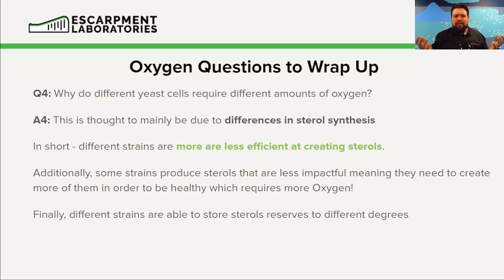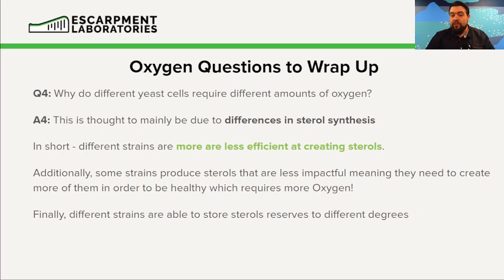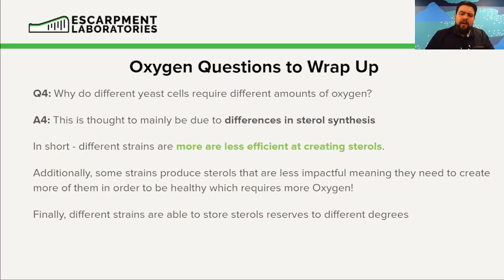Why do different yeast cells require different amounts of oxygen? Different yeast cells will produce different types and quantities of different sterols, and not all sterols are as efficient as each other. Certain sterols are phenomenal, like ergosterol. Other sterols, like some produced in lager yeast, are not as effective or efficient as ergosterol. This means that in order for those yeast cells to become happy and healthy, they require more of those less efficient sterols, which requires more oxygen. Additionally, different yeast cells are thought to have higher or lower ability to store fatty acids that will help buffer out sterols — though more research is required on that one.